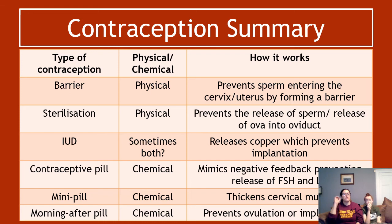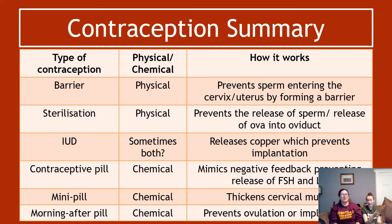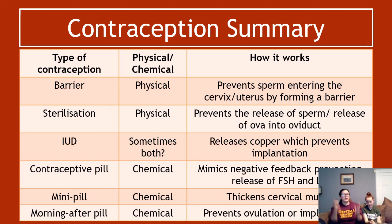To summarise: barrier methods are physical methods that prevent sperm entering the cervix or uterus by forming a barrier. Sterilisation is a physical method that prevents the release of sperm or ova into the oviduct. An IUD — listed as physical by the SQA — releases copper which prevents implantation. The contraceptive pill is chemical and mimics negative feedback to prevent FSH and LH production. The mini pill is chemical and thickens cervical mucus. The morning-after pill is also chemical and prevents ovulation or implantation of an already potentially fertilised zygote. That's everything you need to know about contraception and the whole of key area three.